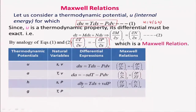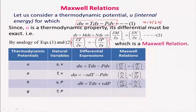In a similar fashion, dH = T dS + V dP, from which we can write ∂T/∂P|S = ∂V/∂S|P. All of these are trying to connect entropy with respect to measurable properties like pressure, temperature, and specific volume.